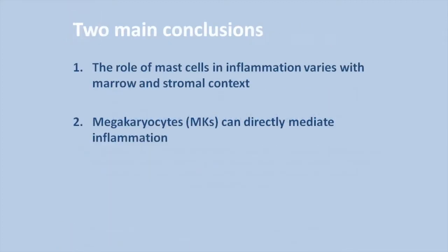Our study reached two central conclusions, which turned out to be surprisingly interrelated. First, the role of mast cells as a contributor to inflammation is not all or none, but varies with marrow and stromal context. Second, megakaryocytes — MKs for short — can serve as inflammatory cells in their own right even aside from their platelets. Let me then lead you briefly through our results to show you how we reached these conclusions using a murine model of inflammatory arthritis.